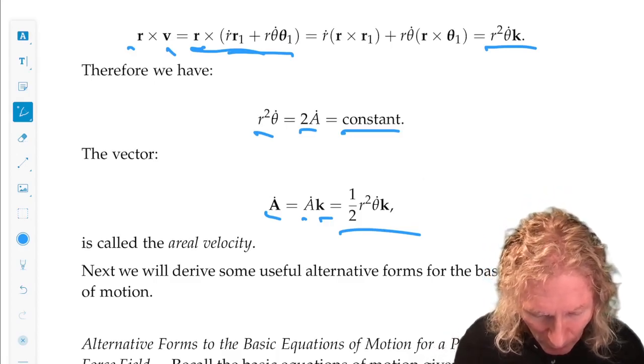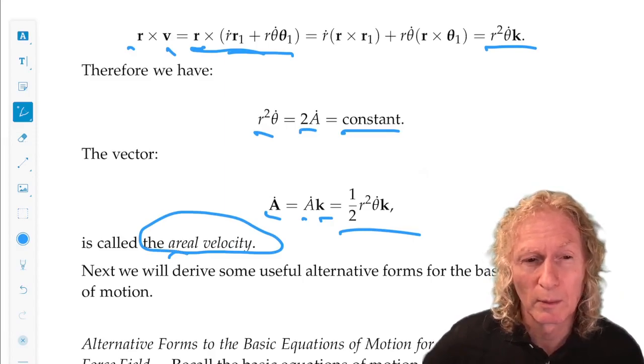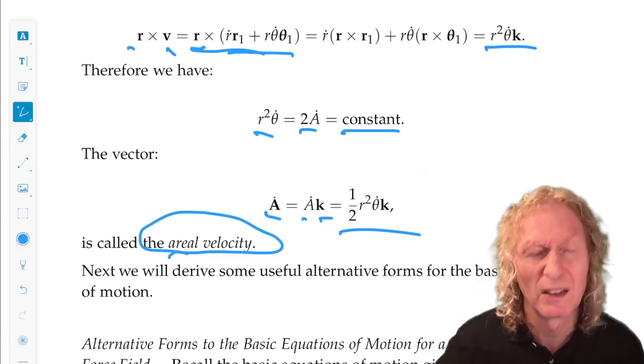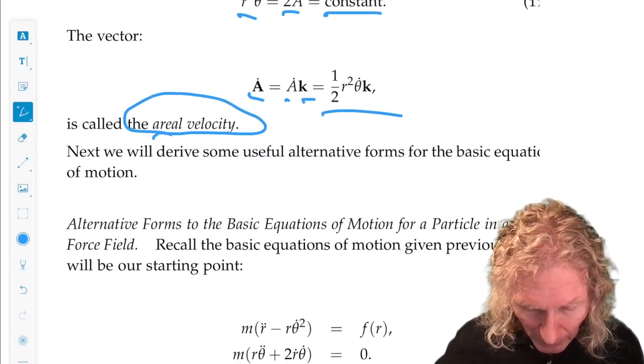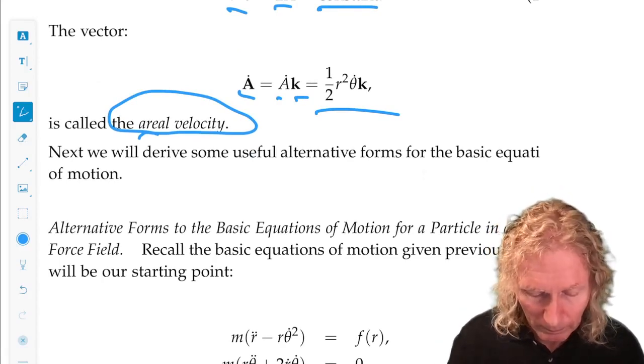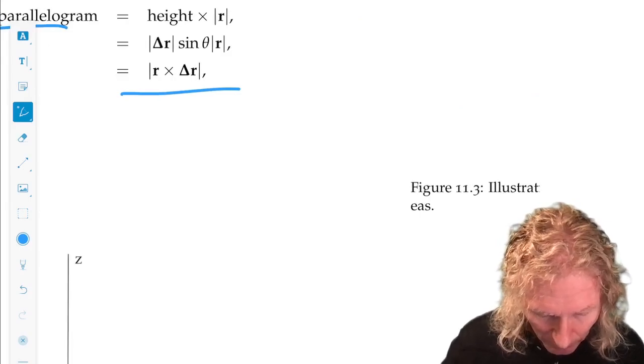This is what we call the areal velocity, and this was something Kepler proved first in the mid-1600s. This expression, r²θ̇ multiplied by m or by ½ or things like that, is going to come up a lot.